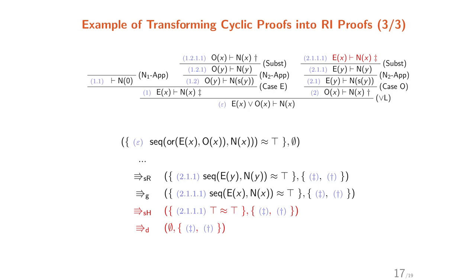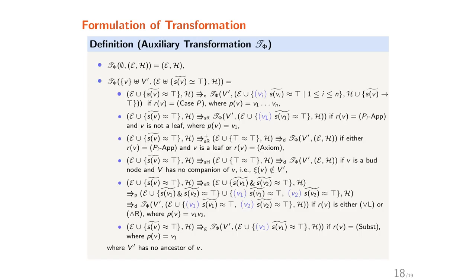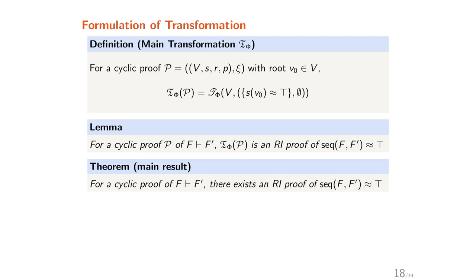For the bud node, we simplify and delete it. We obtain an empty set, meaning the proof is finished and the equation is proved successfully. For the above transformation, we have the formulation: for a cyclic proof P with root V0, transformation T5(P) equals T5(V0), S(V0) = TOP, and empty set. The detailed definition of the transformation is shown due to time constraints. We have the lemma: for a cyclic proof P of sequent F ⊢ F', the transformation T5(P) is a rewrite induction proof of the corresponding equation sec(F, F') = TOP.